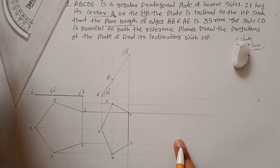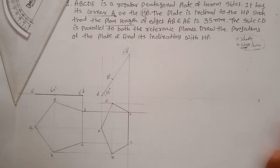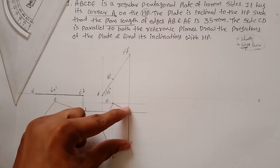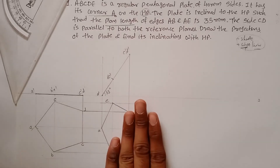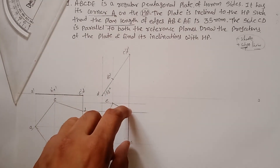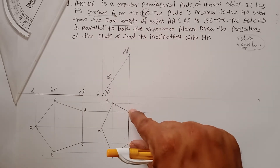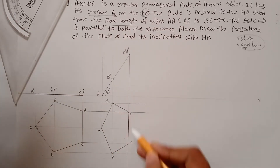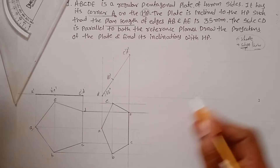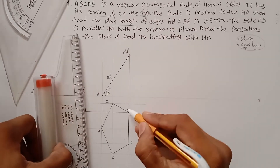For the third position, read the third line: side CD is parallel to both reference planes. Currently CD is perpendicular to VP, so you need to make it parallel to VP as well. Consider the XY line as VP. Rotate the CD line so it becomes parallel to both HP and VP, which means transferring the whole pentagon. Construct a rectangle to transfer the pentagon.